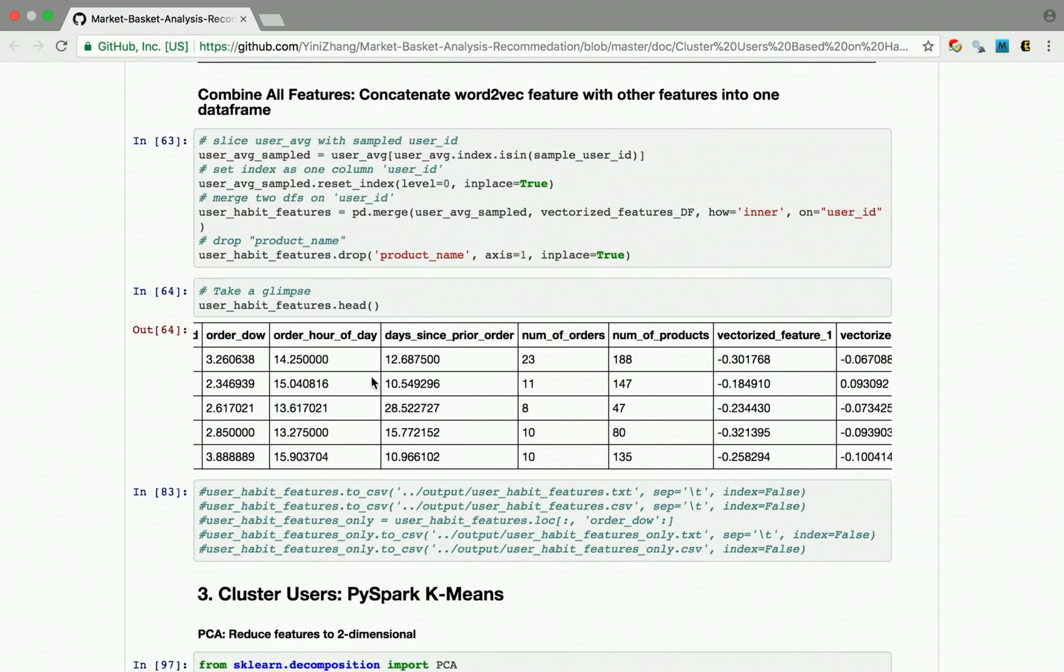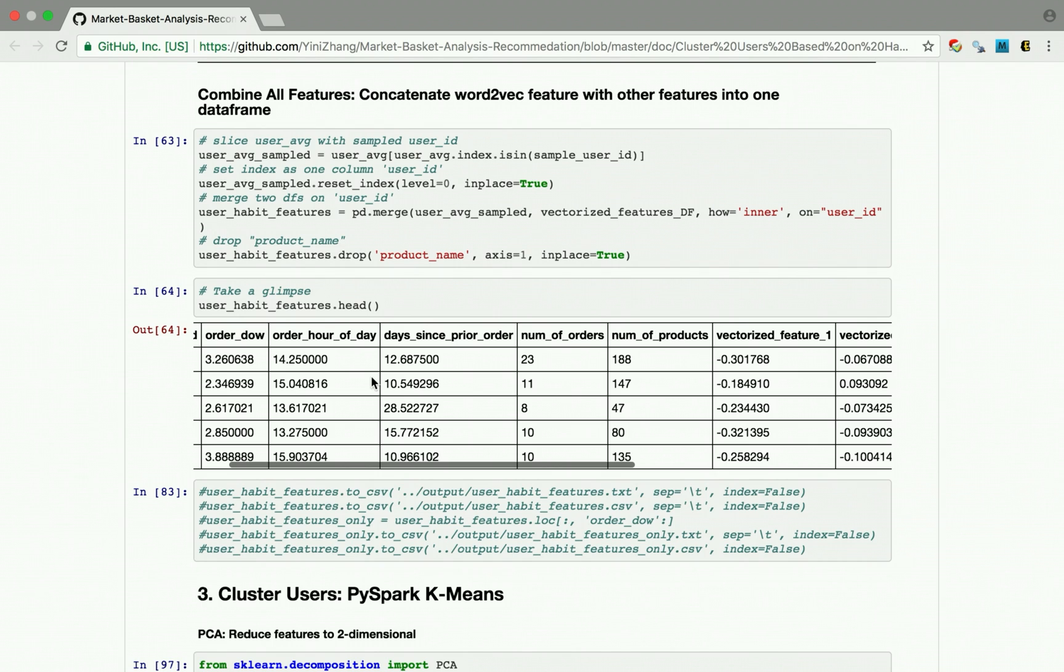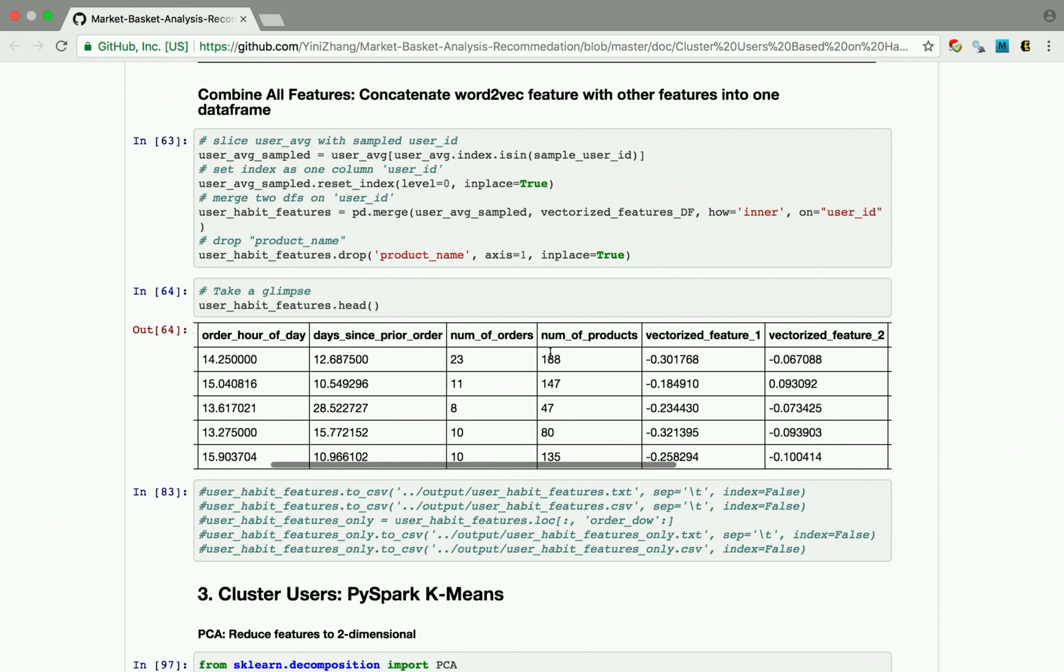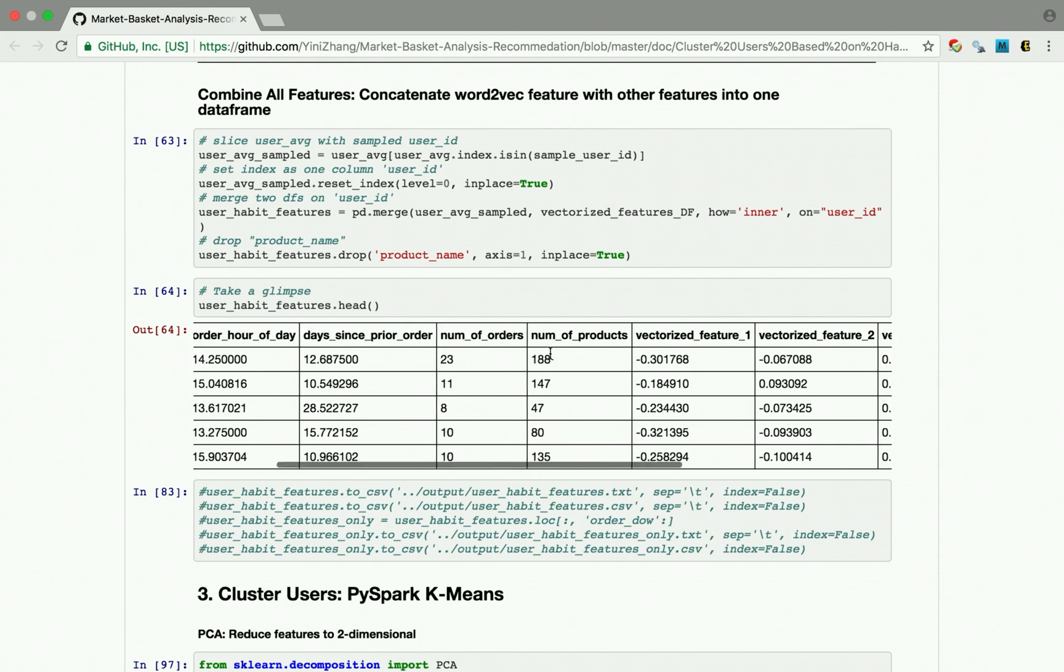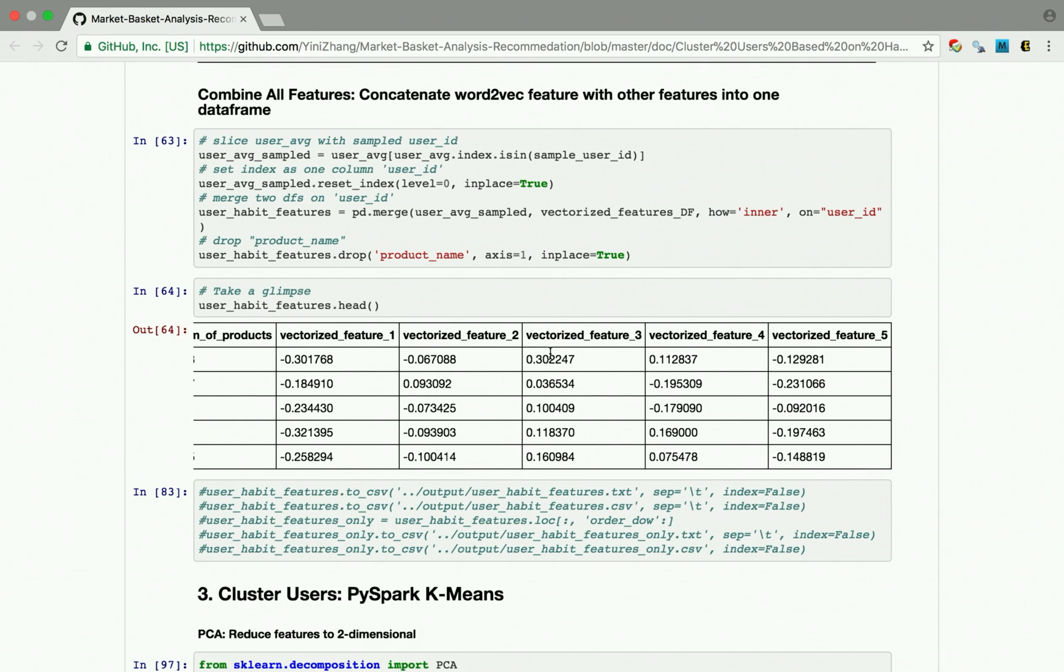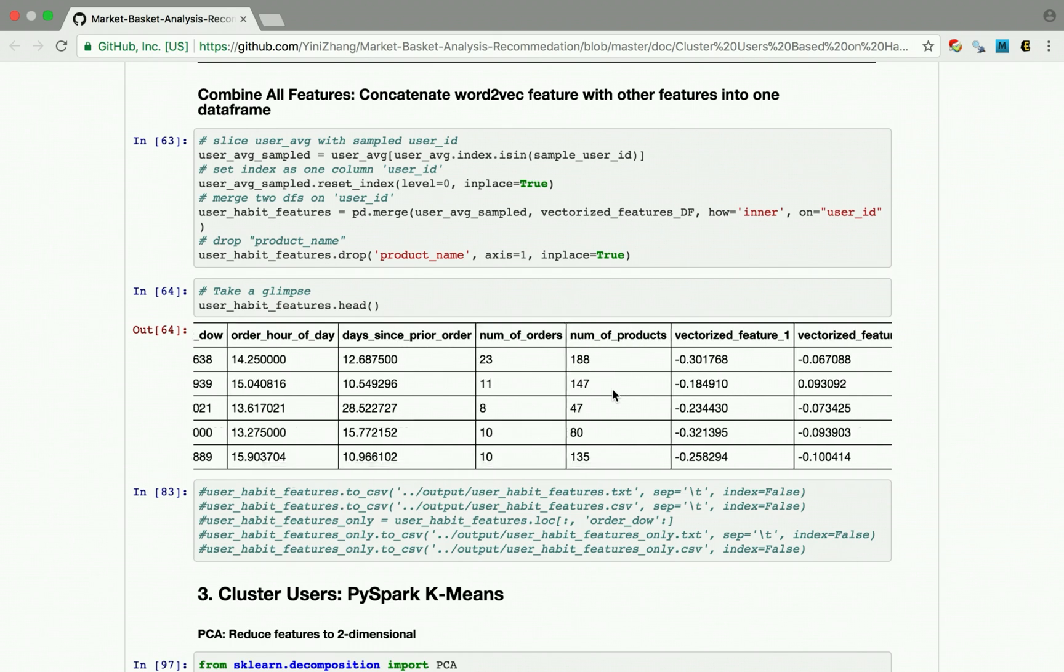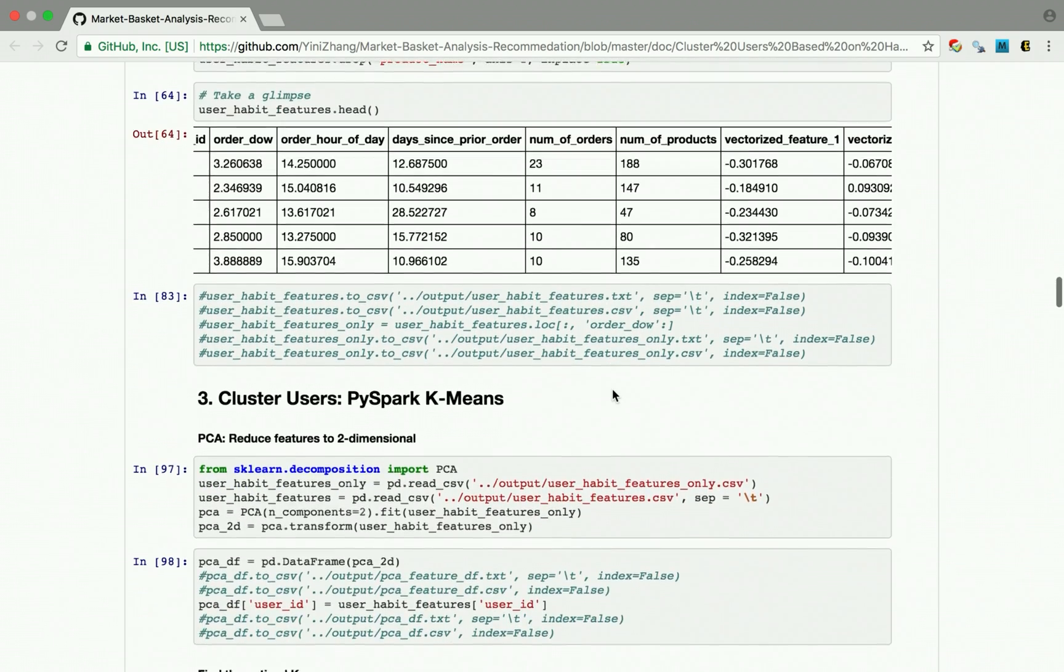These are all the features we extracted. The first five columns here are the user habits features. For example, it includes the day of week and the hour of the day they usually place their order, how many days passed since previous order, their total number of orders and their total number of products bought. The later five features are extracted from user preferences. We use word2vec to map the product name to five dimensions. And then we combine all these ten features together and we train it in k-means.